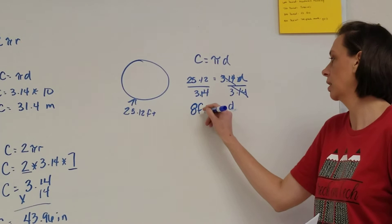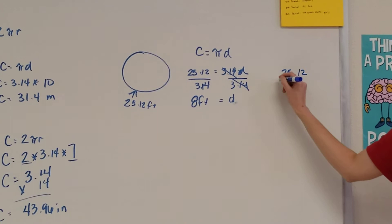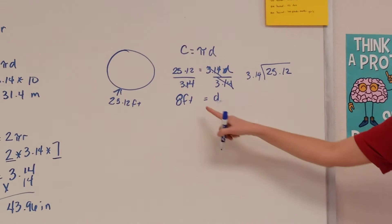and if you had worked all that out, you would have gotten 8 feet for your diameter. Again, if you wanted to work that out, you would go top in, bottom out, with your long division. You would have come up with 8 feet.